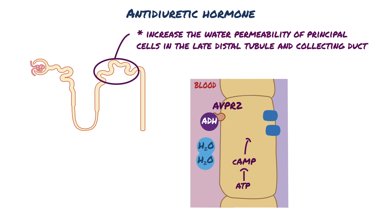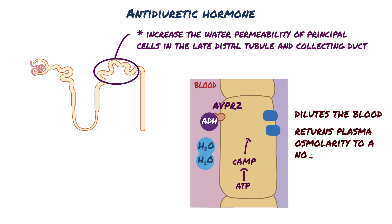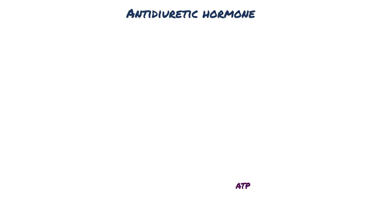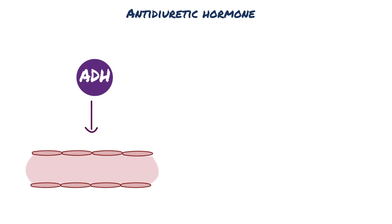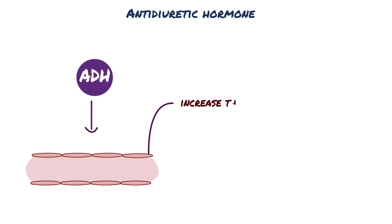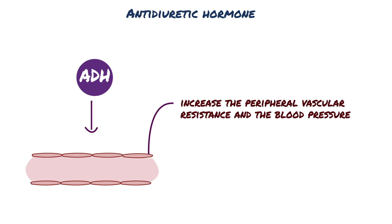Just like drinking more water, this dilutes the blood and returns plasma osmolarity to a normal level. Additionally, ADH acts on smooth muscle cells in the arteries, causing them to constrict, which increases peripheral vascular resistance and blood pressure.